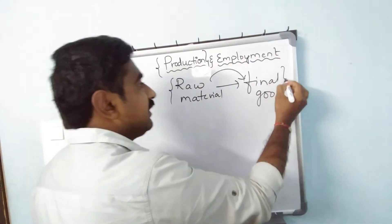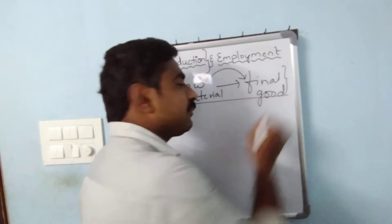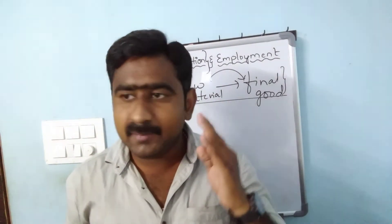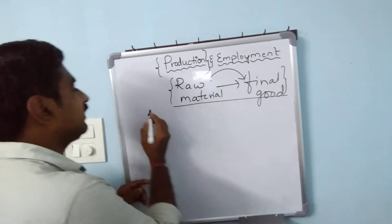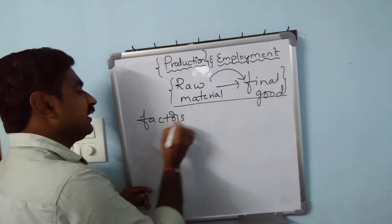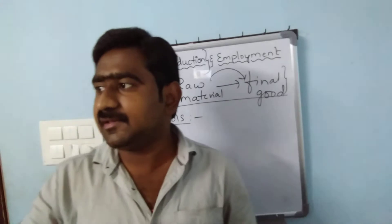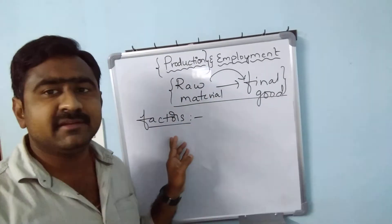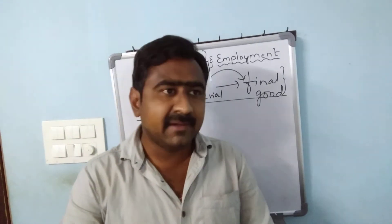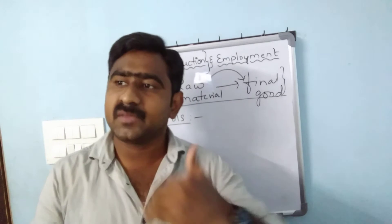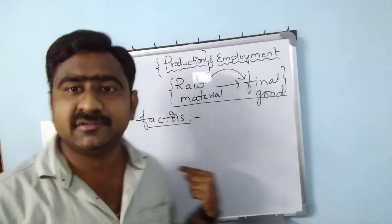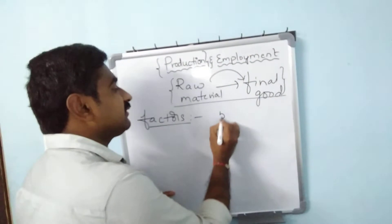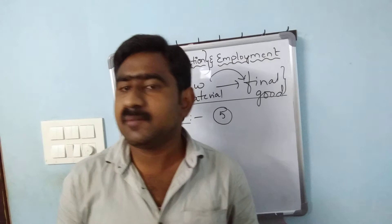Production is defined as a process in which raw materials are converted into final goods in an industry or factory. To maintain and carry out production, we have to maintain some factors. There are mainly five factors which support the production. The factors of production are five.